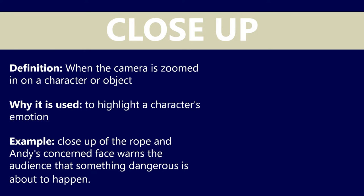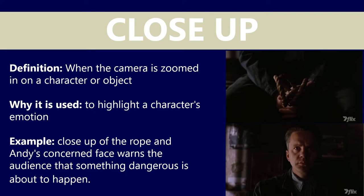We'll start with a really easy one. This is a close-up. It's when the camera is zoomed in on a character or an object, and it's done in order to highlight a character's emotion or facial expression or their reaction to something that happens in the film. It provides the audience with a bit more of an insight into what they're thinking or feeling. In this particular scene, there is a close-up of the rope that Andy is holding, and the camera tilts up to a close-up of his concerned face.